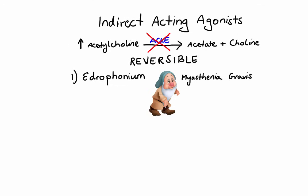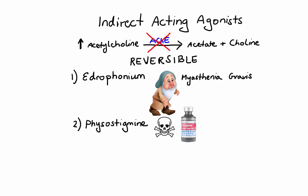Myasthenia gravis is a neuromuscular disease caused by antibodies that block acetylcholine receptors, leading to muscle weakness. When edrophonium is administered to a patient with myasthenia gravis, we observe a rapid increase in muscle strength. Physostigmine stimulates both nicotinic and muscarinic receptors and is an intermediate acting agent with a duration of action of about 30 minutes to 2 hours. It has historically been used in the treatment of overdoses of anticholinergic drugs such as atropine. Neostigmine is another intermediate acting agent, but unlike physostigmine, its structure is more polar, so it does not absorb well from the GI tract and does not enter the CNS.